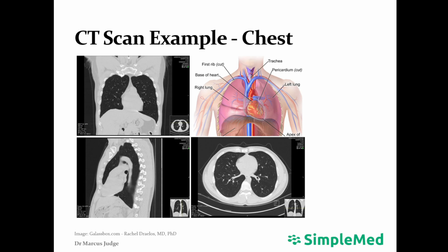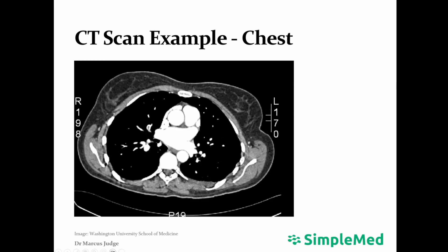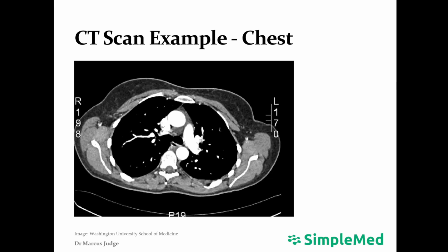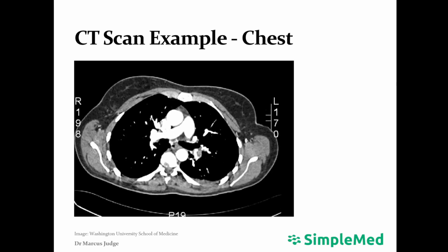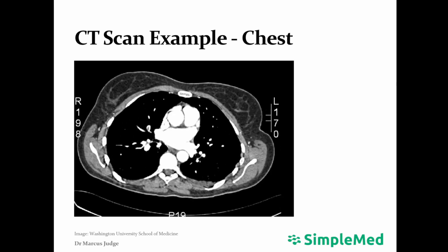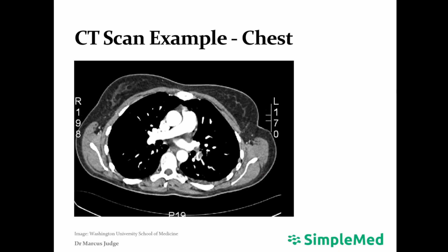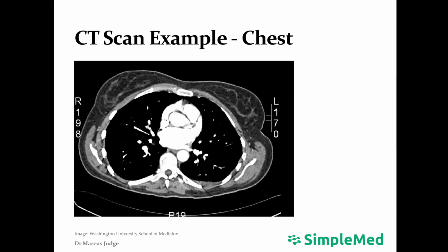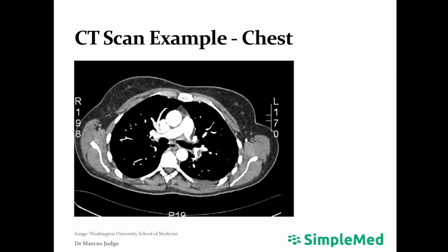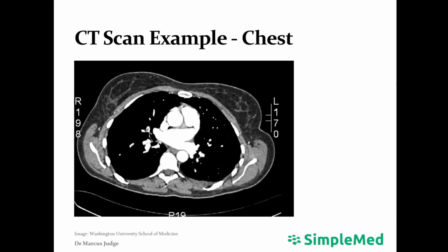This is a 3D image and can be scrolled through by the radiologist, and gives a better example of what is actually happening in the chest and any pathology that might be present. Note the difference between areas of the lung that have air in them and so are black, and surrounding tissues which are lighter colours based on their density.